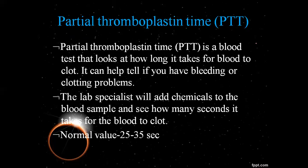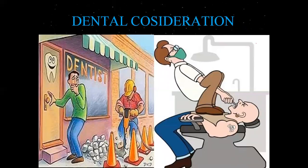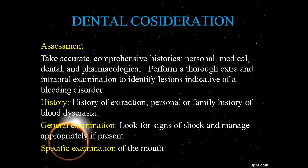In the PTT test, you prick the ear and leave blood unassisted, noting whether it clots within 35 seconds. This test is used in cases of family history of blood disorders. The assessment helps identify bleeding disorders, and after that, specific treatment and specific examination are determined.